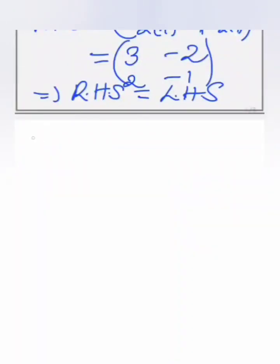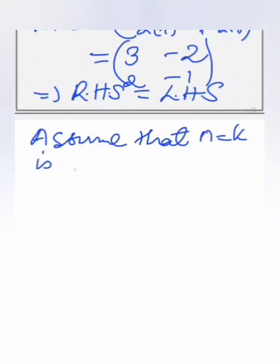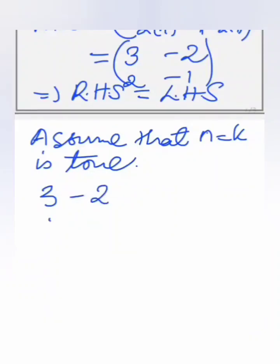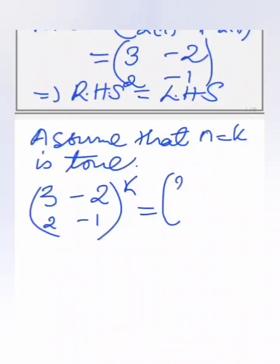For the hypothesis step we assume that the statement is true for n equals k, and then use that fact to prove that the statement is true for n equals k plus 1. Replacing every n by k, we get: [3, -2; 2, -1] to the power k equals [2k+1, -2k; 2k, 1-2k].